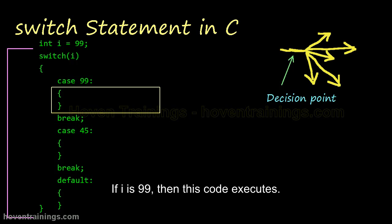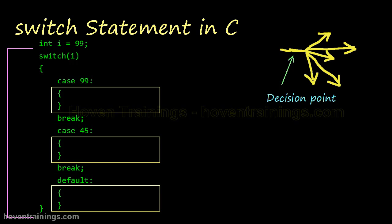If I is 99, then this code executes. If I is 45 then this code executes. If it is neither 45 nor 99, then the default label executes.